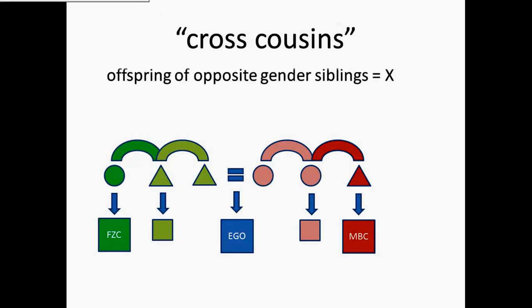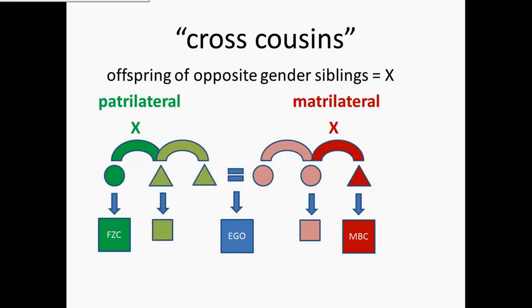Cross cousins, on the other hand, are offspring of opposite gender siblings, and we mark those with an X. You have two kinds of cross cousins. Patrilateral cross cousins are the offspring of your father's sister. And matrilateral cross cousins are the offspring of your mother's brother. So we have that marked FZC — father's sister's children — and MBC — mother's brother's children. The cross in gender is in the parent's generation, because cousins are the offspring of siblings, so we have to look at the generation of ego's parents to determine cross and parallel. That's all that matters in terms of gender — the parent's gender.